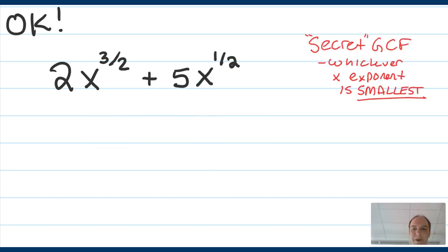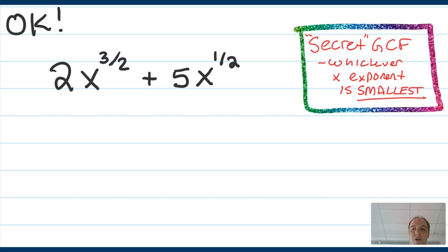So in general, for all these problems, that secret GCF I was talking about is going to be whichever power of x has an exponent that is the smallest, because that exponent will—any smaller exponent will always be able to be found inside of a larger exponent when you divide those exponents into multiple terms.